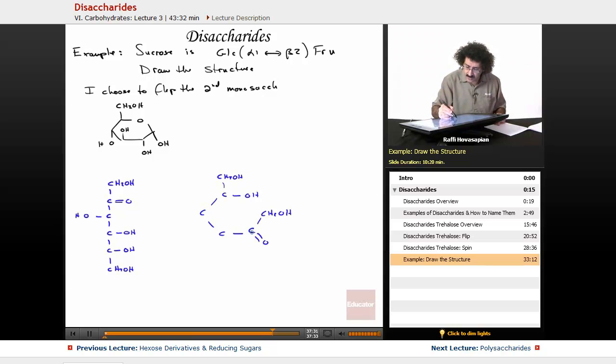Now, one, two, three, four, five. That's right. So I'm going to end up attacking that right there. And what I'm going to end up creating is my beta fructose.